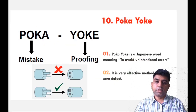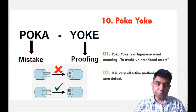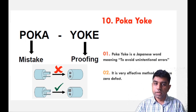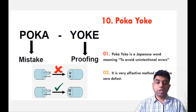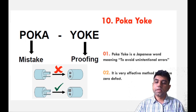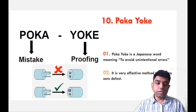Now let us discuss the next quality improvement tool, called Poka Yoke — again a Japanese word. Up till now we have discussed a lot of Japanese techniques: 5S, Kaizen System, and now Poka Yoke. Poka means mistake, Yoke means proofing. Poka Yoke is a Japanese word that literally means to avoid unintentional errors.